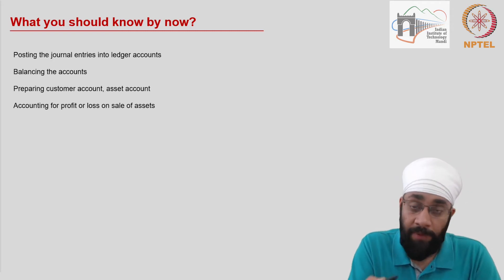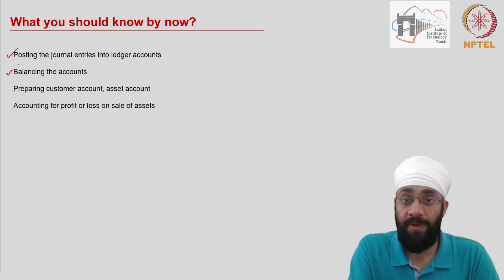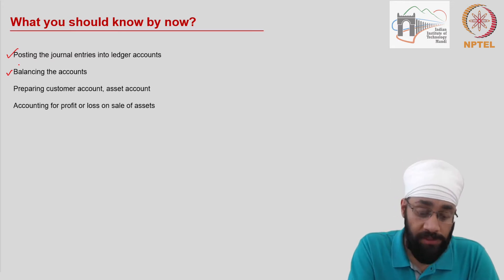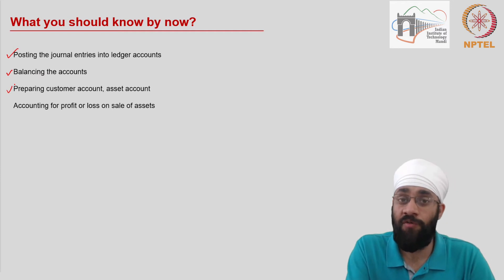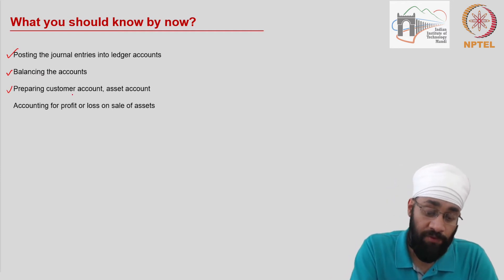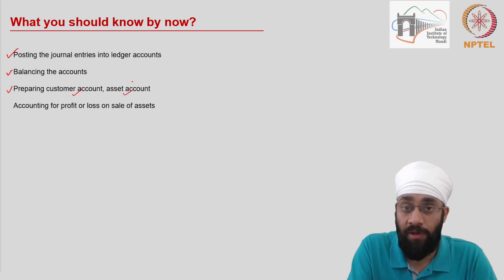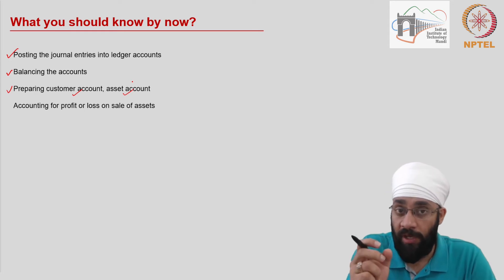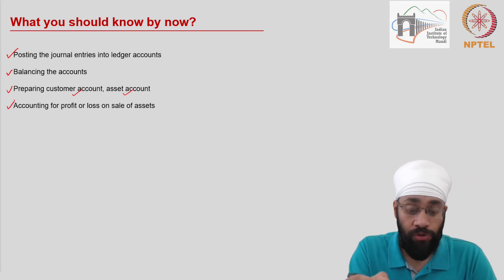By now you should be very familiar with the process of ledger posting. You should know what the debit and credit balances stand for and which types of accounts have what kind of balance. You should also be familiar with the process of preparing a ledger account for a given item — for example, a customer account, an asset account, a bank account, or a depreciation account.